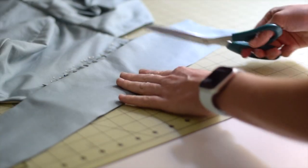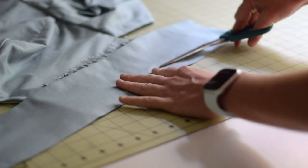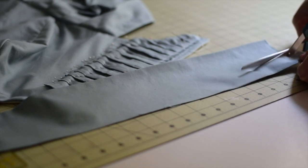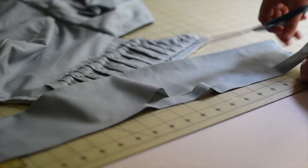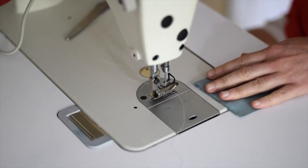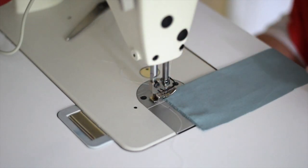Before I actually gather it, I'm going to trim this down because it's not necessary for it to be going all the way over. So I'm going to trim it down. Running stitches, which are number five, going all the way down.